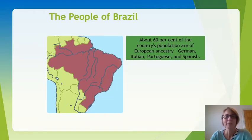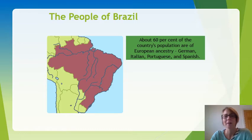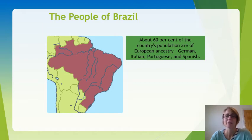Looking at the people of Brazil and their ancestries: about 60 percent of the country's population are of European ancestry — their families originally came from Germany, Italy, Portugal, and Spain.